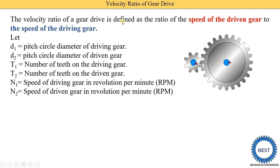According to the definition, the equation of velocity ratio is: speed of the driven gear N2 divided by speed of the driving gear N1. So, VR (velocity ratio) is equal to N2 upon N1.